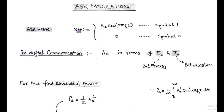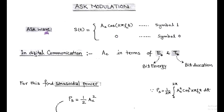Commonly, one of the amplitudes is 0. That is, one binary digit is represented by the presence of the carrier wave with constant amplitude, and the other binary digit is represented by the absence of the carrier wave. So the ASK wave is represented by S(t) = AC·cos(2πfct) for symbol 1, and 0 for symbol 0.